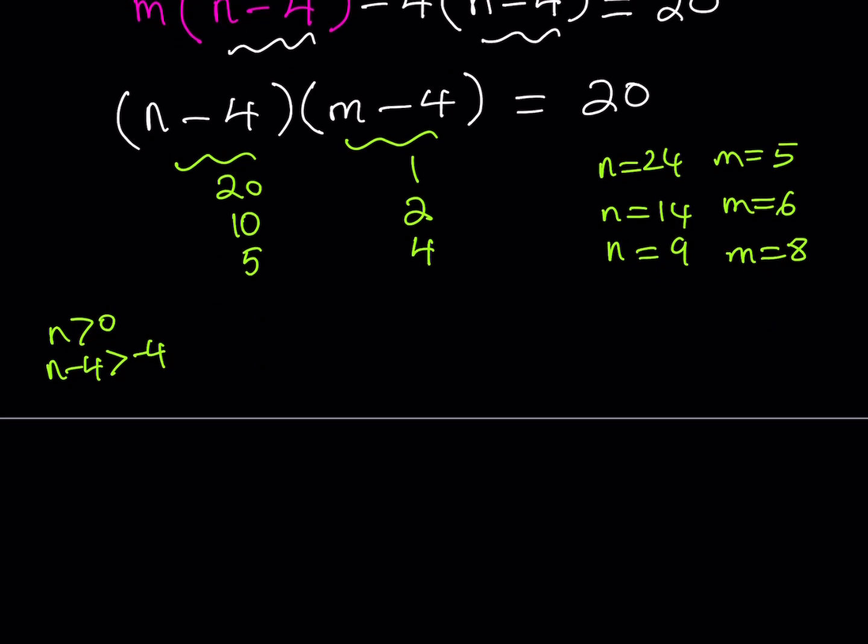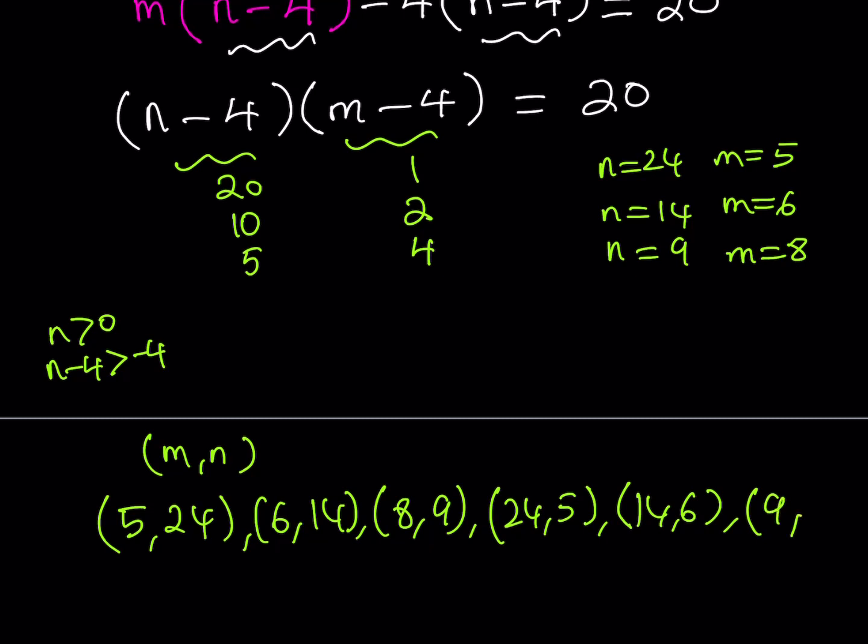So our solution set is then, if I write it as an ordered pair like (m,n), if I were to write the solutions as ordered pairs, then I should be getting (5, 24). And then I would get (6, 14). Then I would have (8, 9). And then I'll just flip these around (24, 5), (14, 6), and (9, 8). And those are going to be all my positive solutions.